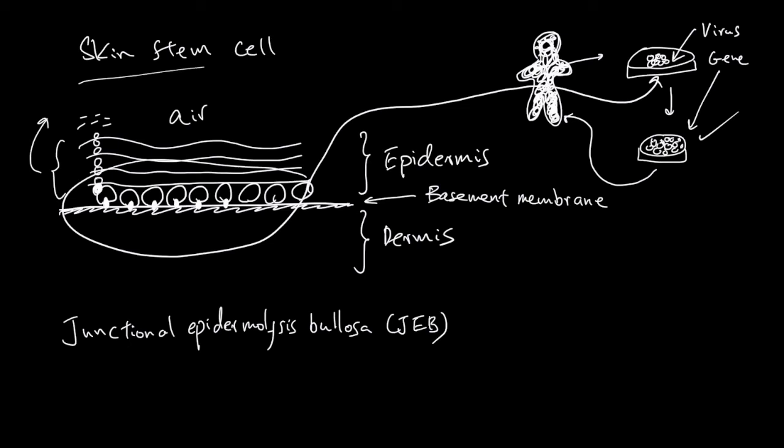So overall, skin stem cells are found on the basement membrane. They constantly divide, make epithelial cells which would differentiate and move superficially to replace dead skin cells. And people with junctional epidermolysis bullosa JEB have a problem in anchoring the stem cells to the basement membrane.